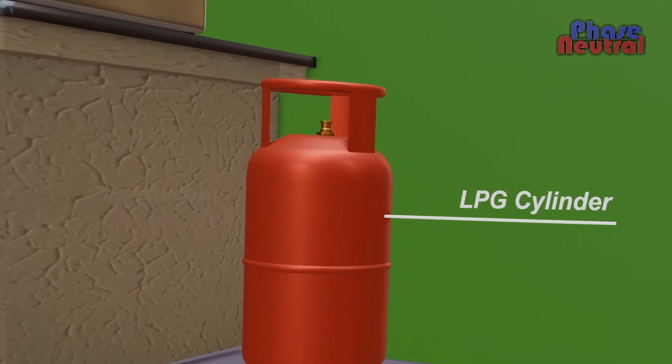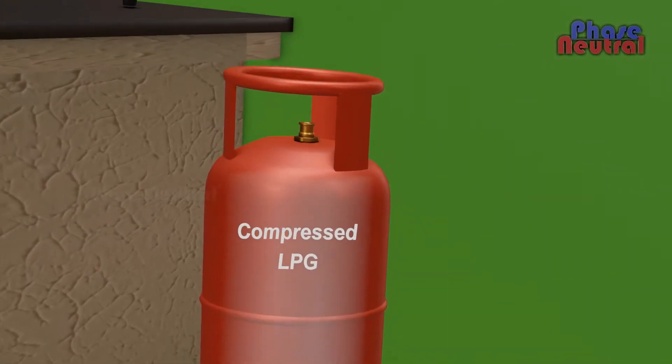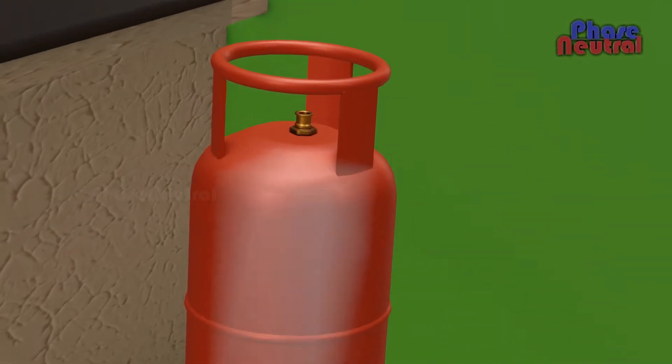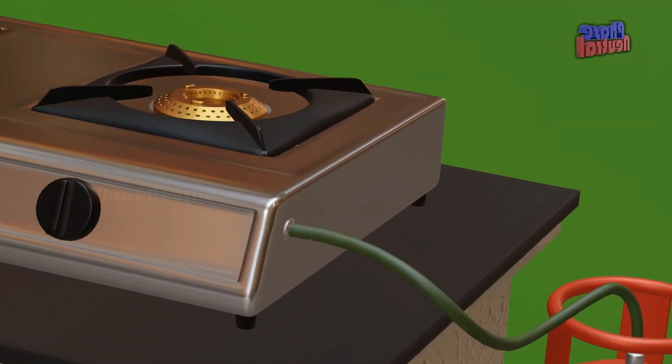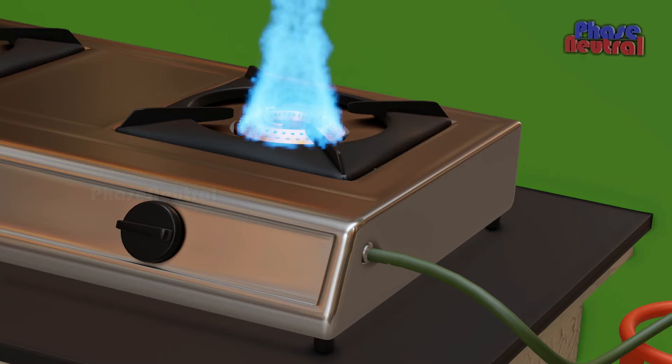LPG is the fuel we use with gas stoves. Gas is stored in a cylinder with highly compressed pressure. If you connect a pipe directly from the gas cylinder to the gas stove, gas will come to the stove with high pressure.